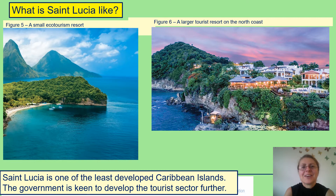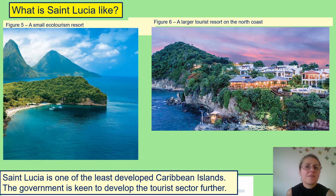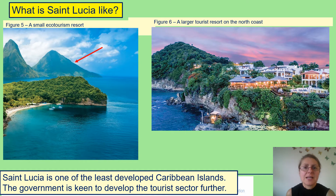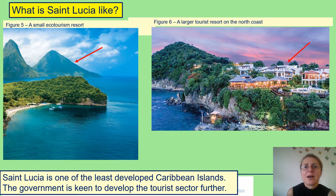So what is Saint Lucia like? The Caribbean is a very attractive place for tourists and draws many visitors from around the world. The climate is lovely and warm. You have beautiful sandy beaches, as seen in figure five. We can see a lovely diverse landscape, with the volcanic mountains of Saint Lucia in the background. There is deep tropical vegetation visible in the images, and in figure six we can see a tourist resort on the island with beautiful sea views.